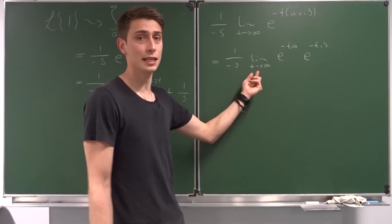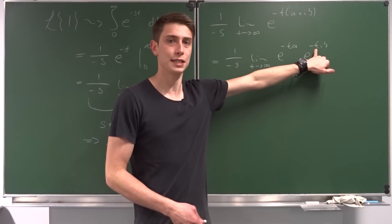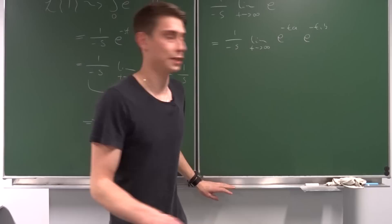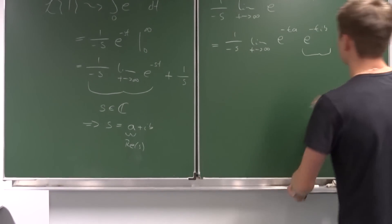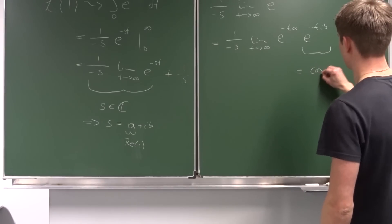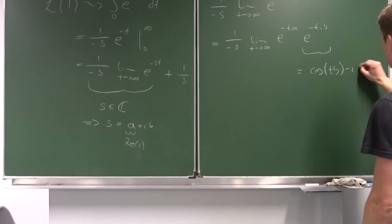But if you plug t approaches infinity into here, this is e to the minus infinity times i times b. The problem here is this is Euler's formula. We can represent this as the cosine of t times b minus i times the sine of t times b.